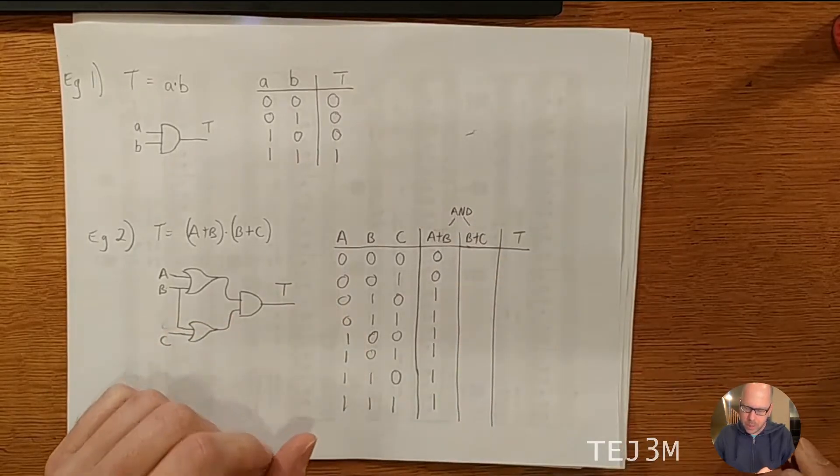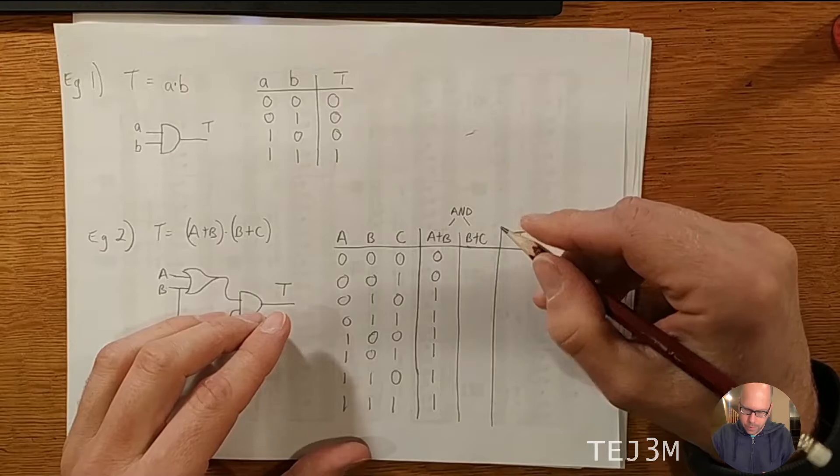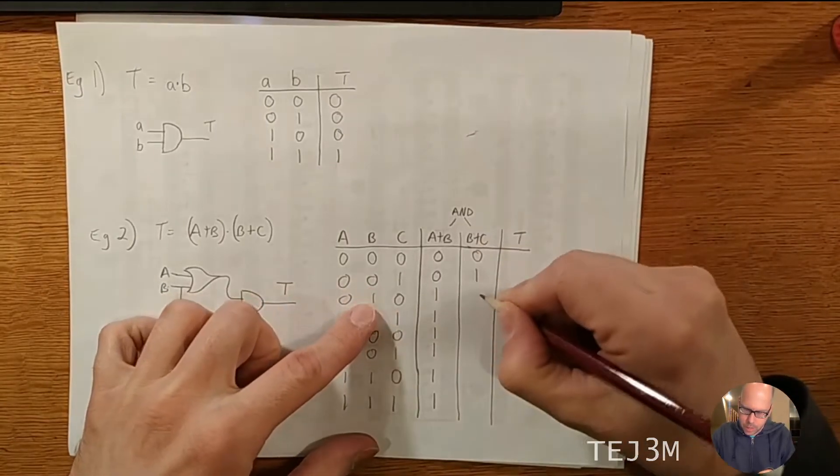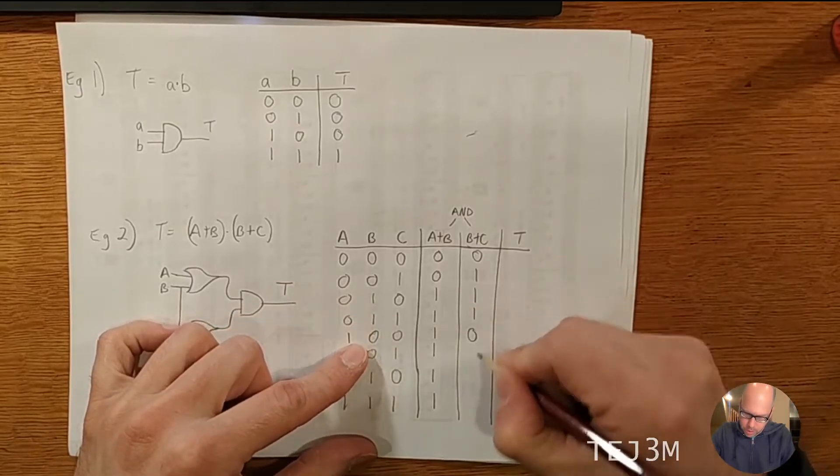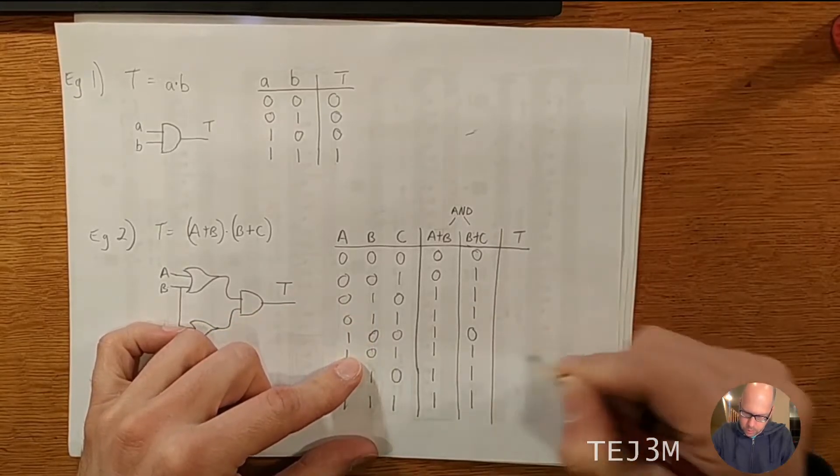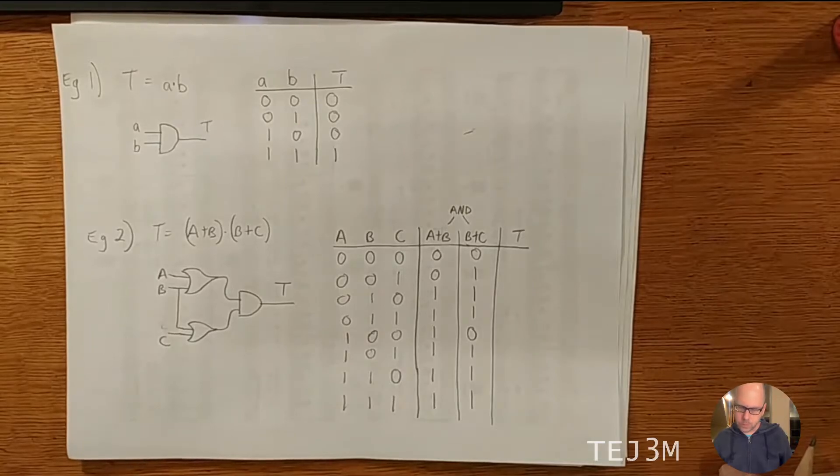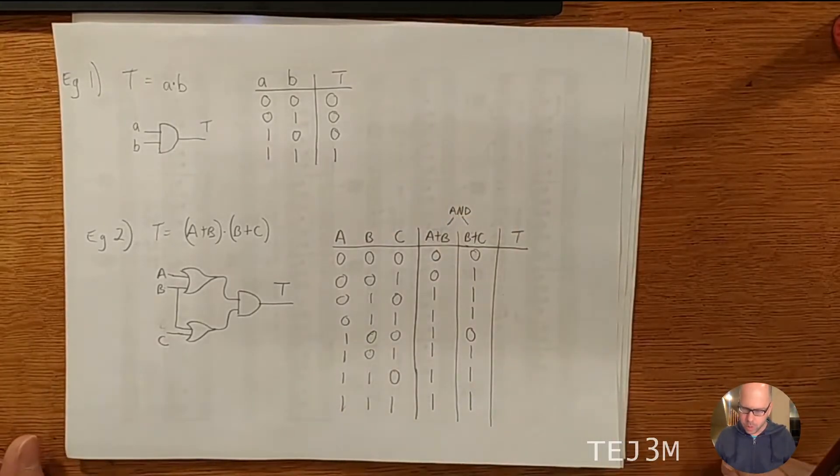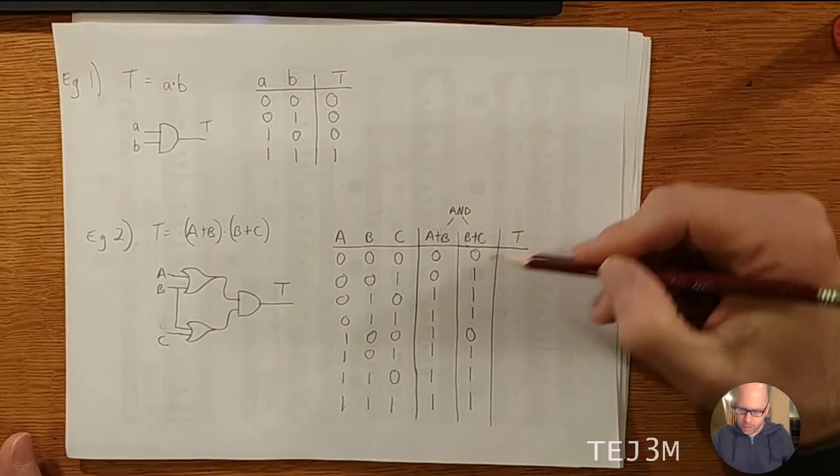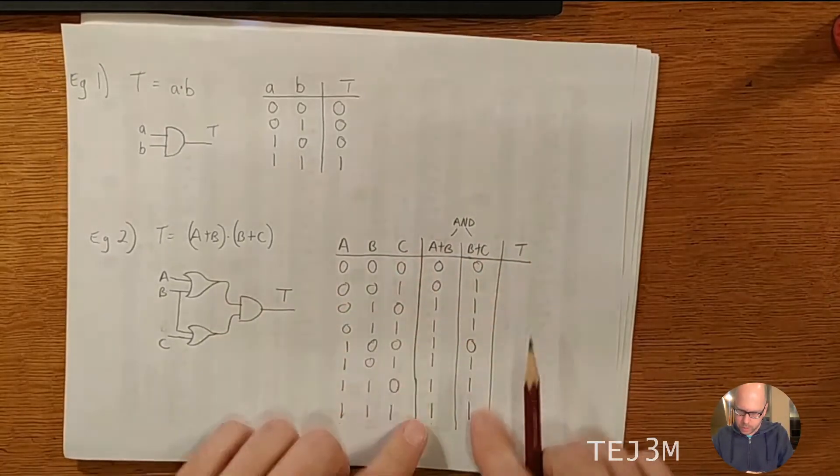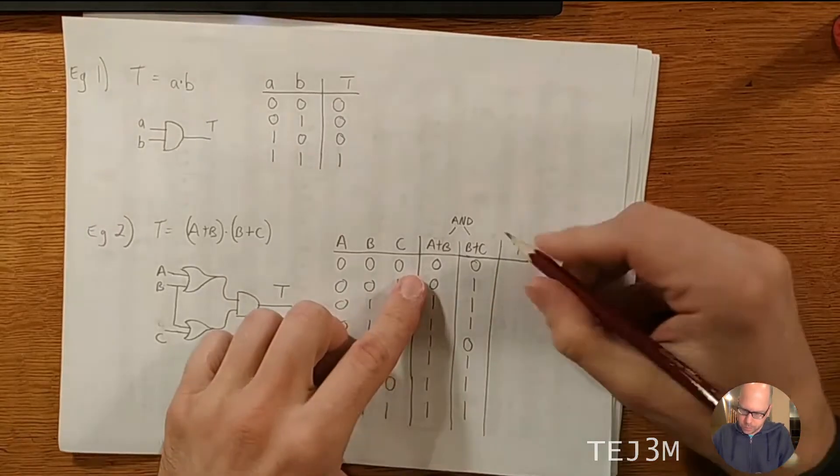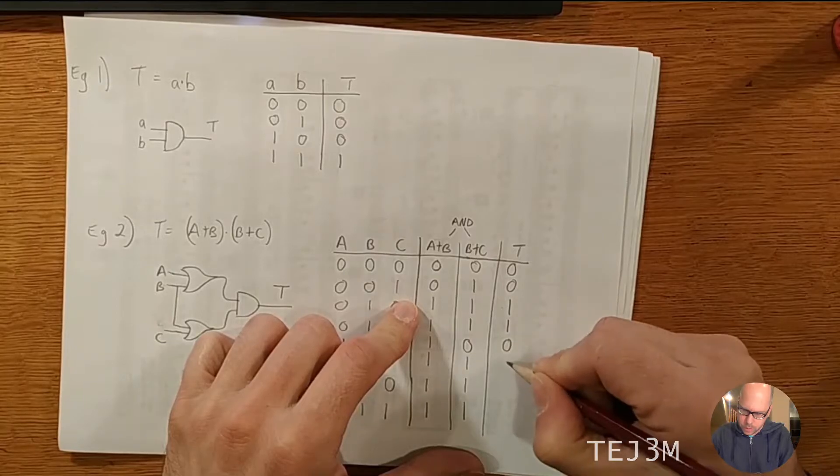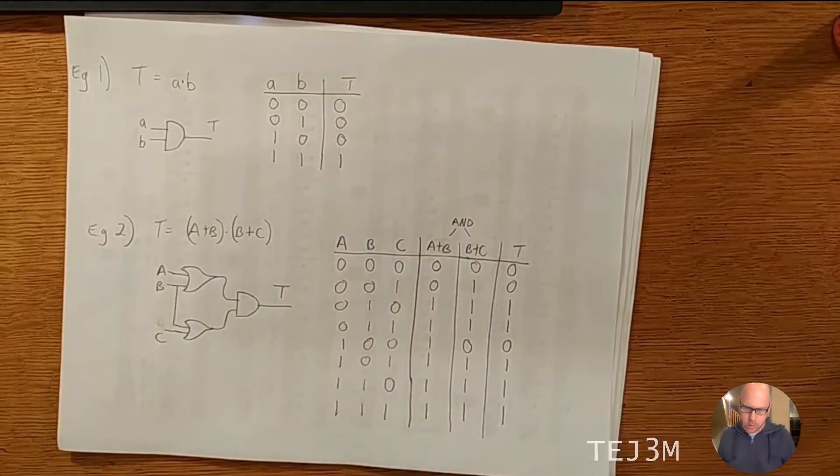And then we have B OR C. So with B OR C, same thing, so zero there, there's a one there, one, one. There's another zero here, and the rest are all ones. Now with T, because the result is the AND of the two, the only time we'll get a one is if both columns here are a one. So we get a zero, zero, there's a one, there's a one, zero, one, one, one. So that's it.